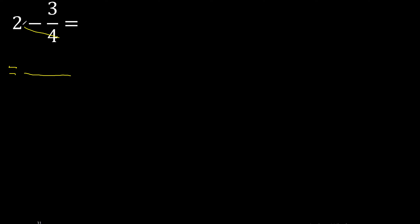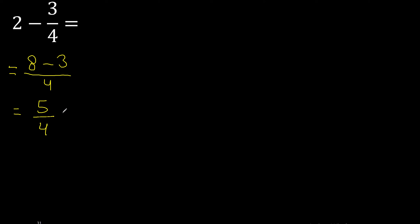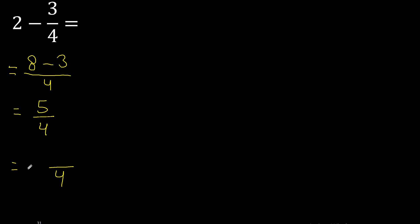First, multiply 4 by 2 is 8. Minus here — 8 minus 3 is 5. Now 5 is greater, so we express it as a mixed fraction. 4 multiplied by which number is nearest to 5 but not greater?